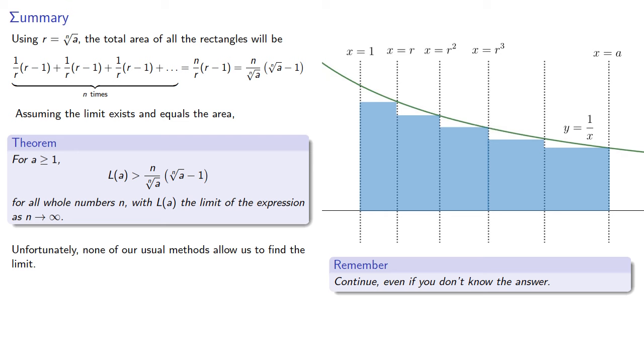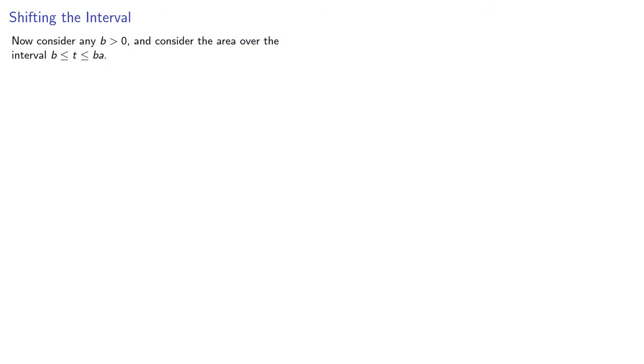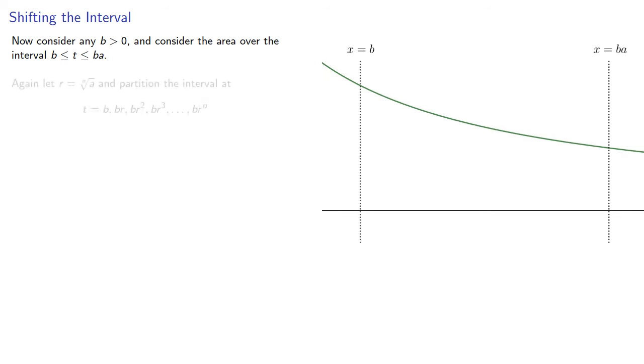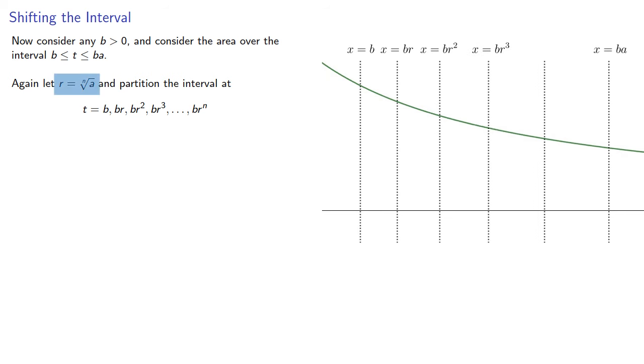In this case, we're actually interested in the properties of l of t, so for now, we don't need to know what the limit actually is. Now, consider any b greater than 0 and consider the area over the interval from b to b times a. Again, we'll let r be the nth root of a and partition our interval at the points b, br, br squared, and so on up to b r to the n, which again, because r is the nth root of a, that's just ba, and we'll form our rectangles.